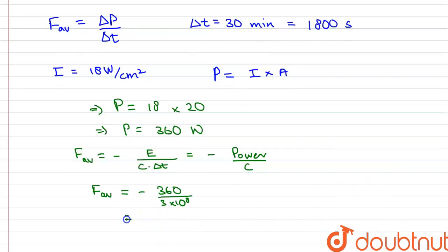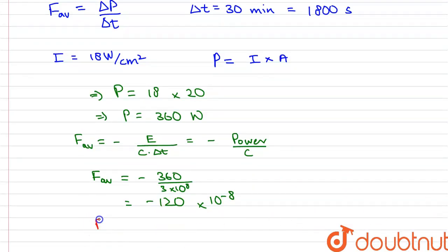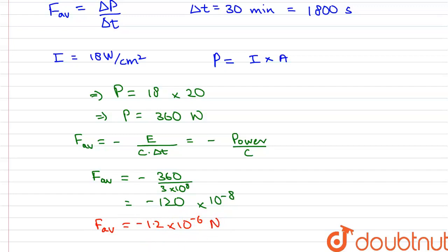On calculating, this comes out to be minus 120 into 10 to the power minus 8. So the average force on the surface equals negative 1.2 into 10 to the power minus 6 newtons. Thank you.